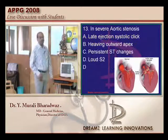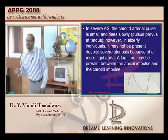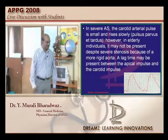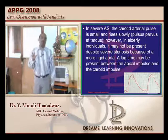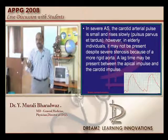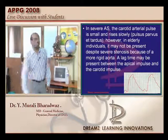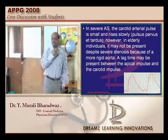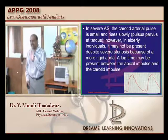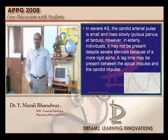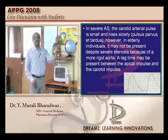In severe aortic stenosis, at least one question on valvular heart disease appears in every entrance exam. The murmurs MSMR, PSTR, PSPR, and ASAR are the bread and butter of any aspirant. The carotid arterial pulse is very small, rises very slowly, which is called pulsus parvus et tardus.